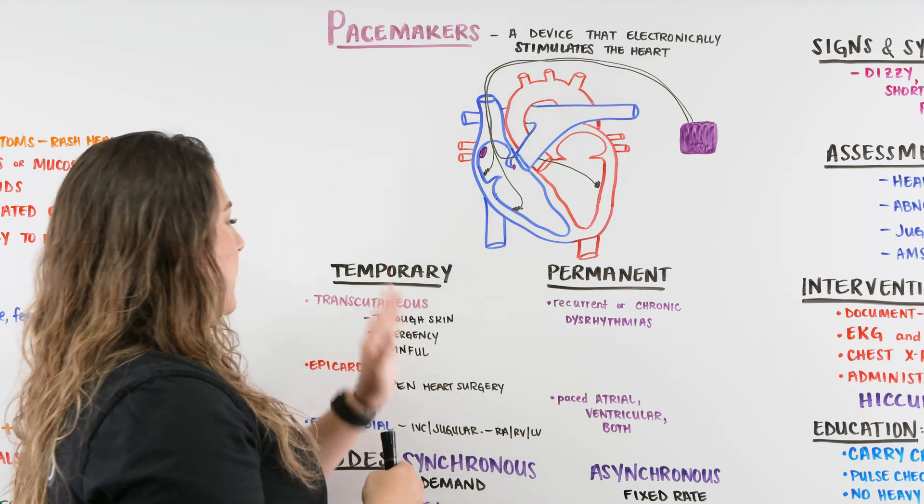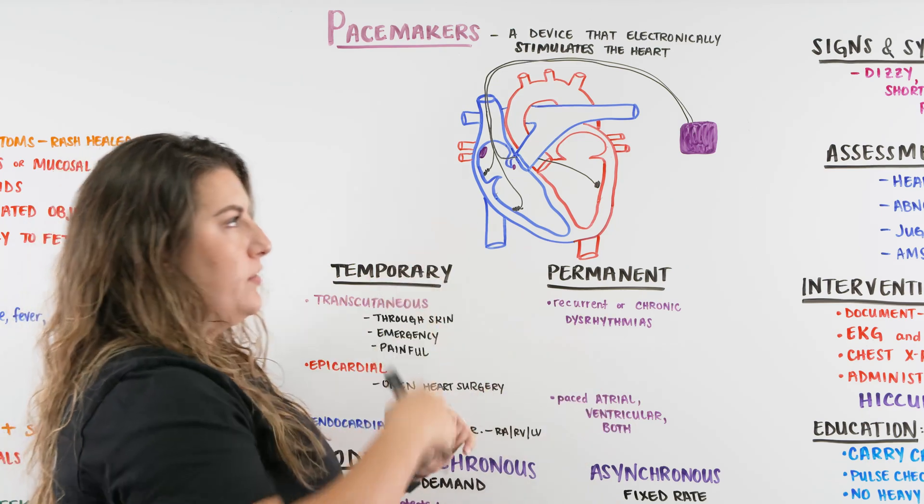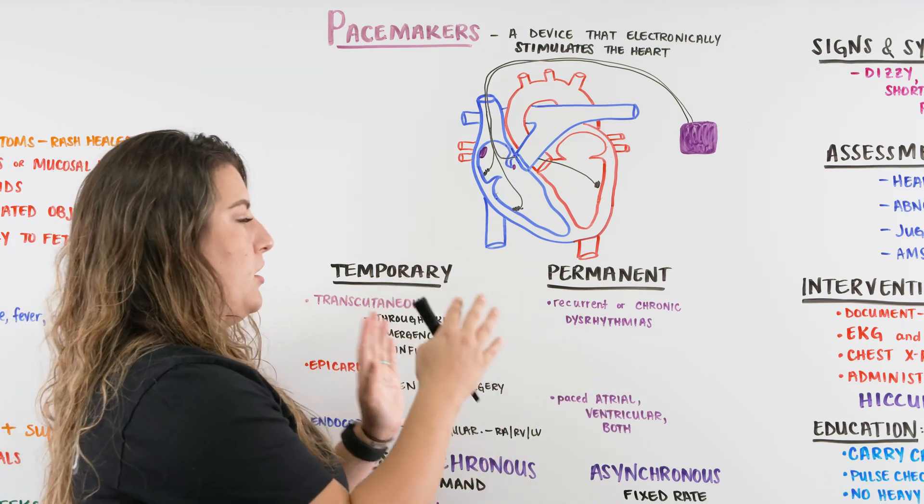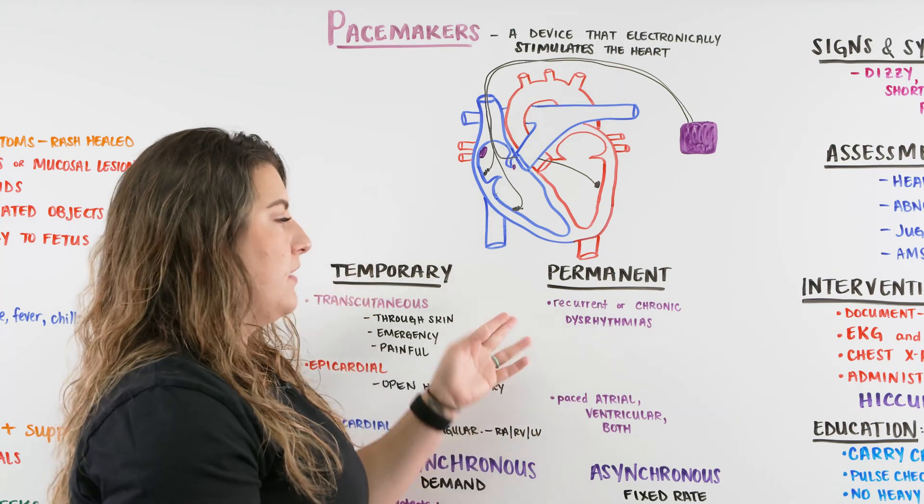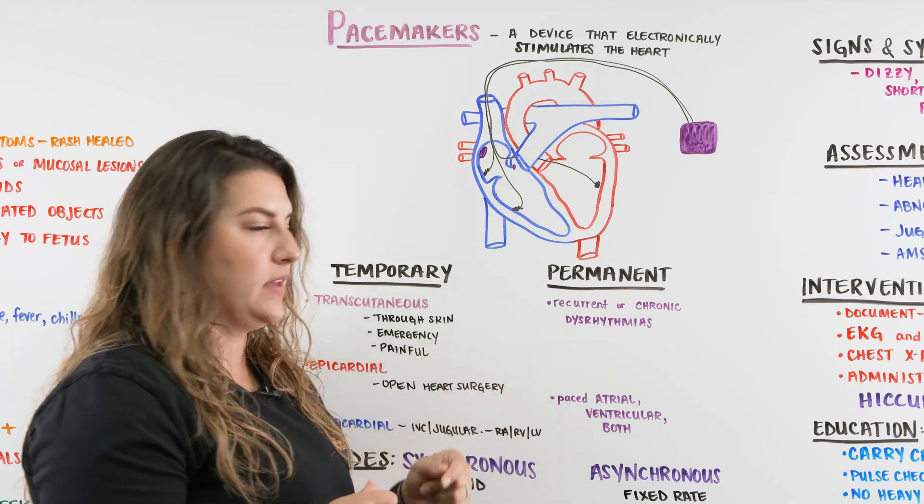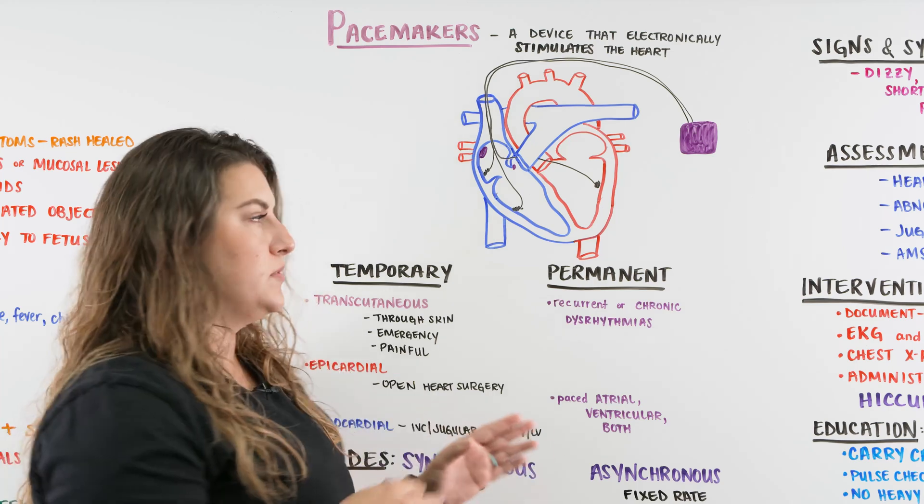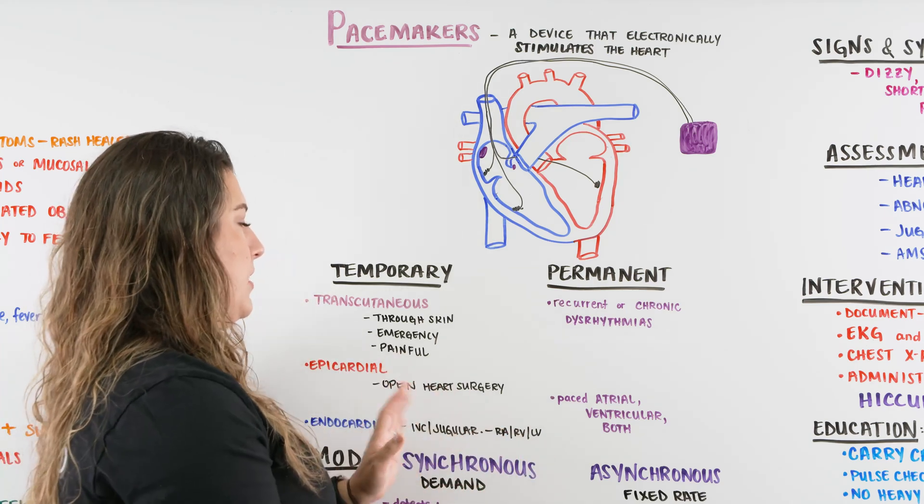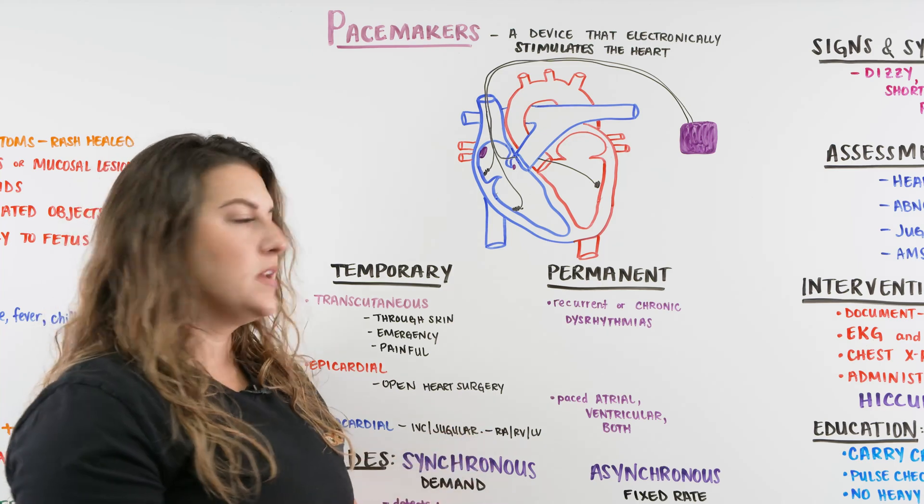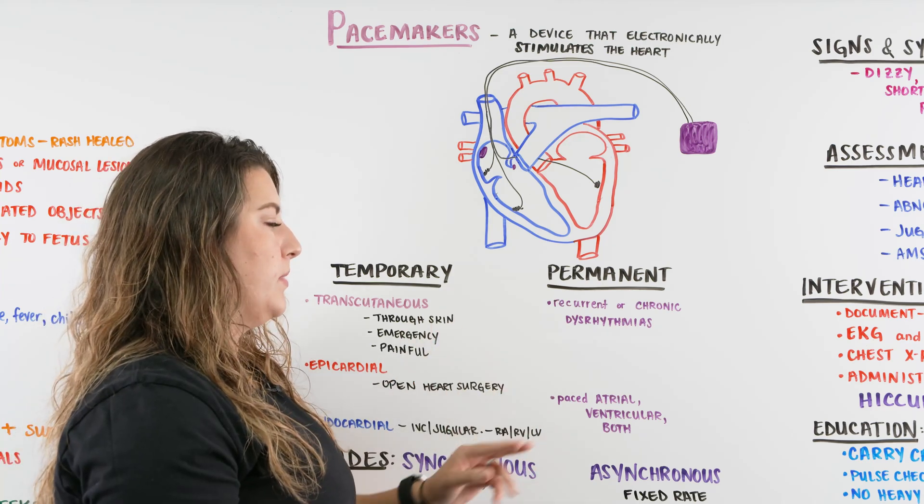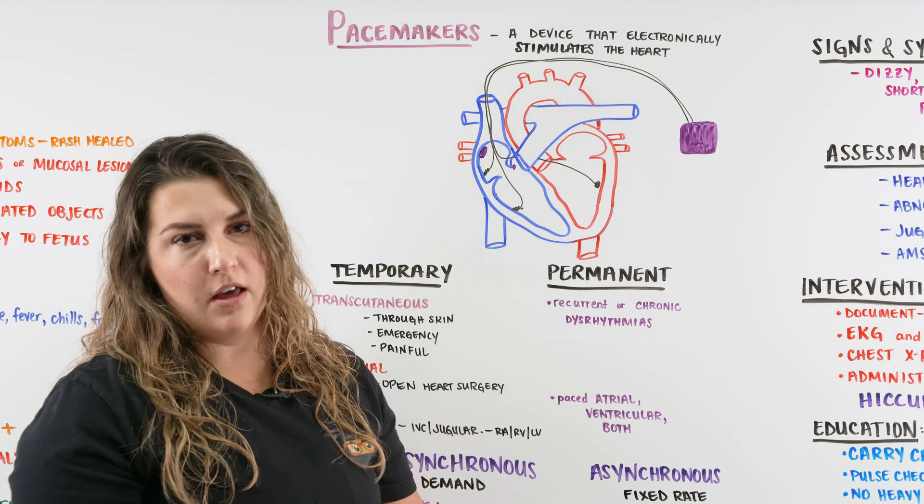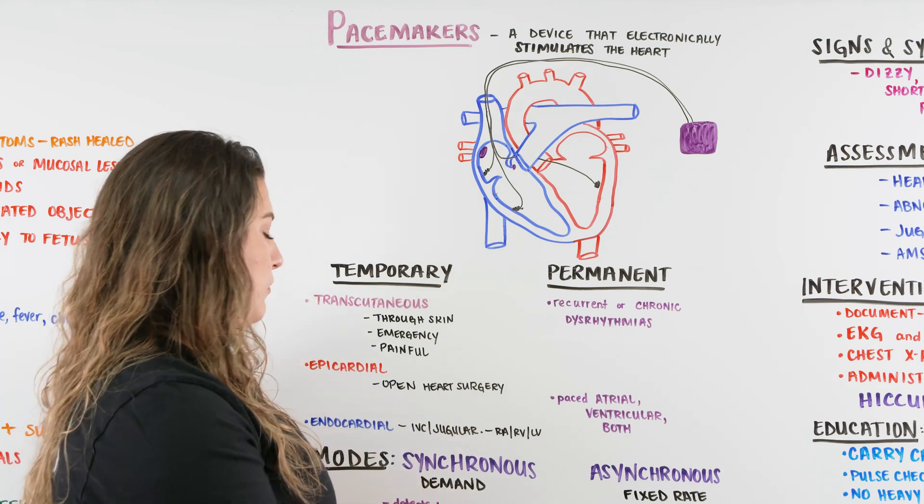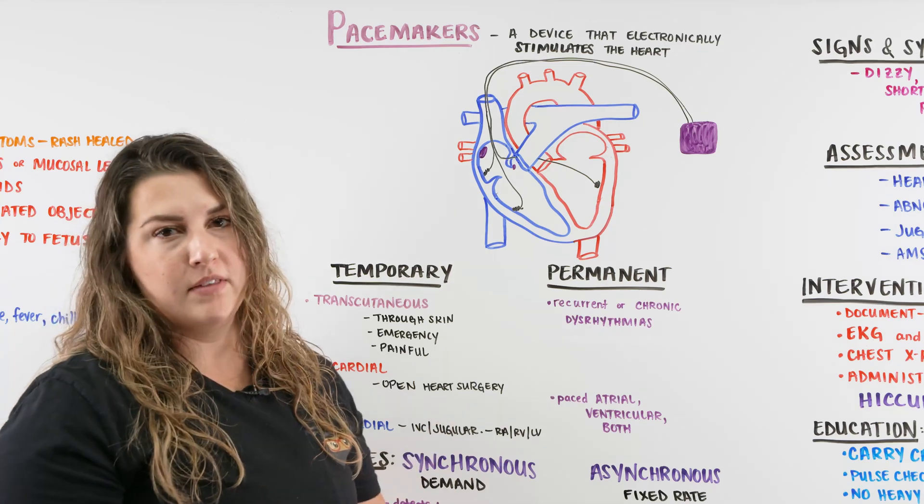Now the patient is having trouble with their pacemaker or they're having an issue with their heart and they're going to need a permanent one. These are the patients that typically have recurrent or chronic dysrhythmias, things that are no longer being substantially controlled with temporary pacing or medications. They also need to be possibly paced atrial, ventricular, or both. So there are a couple different ways we can set up our pacemakers, different modes that we can put them in.